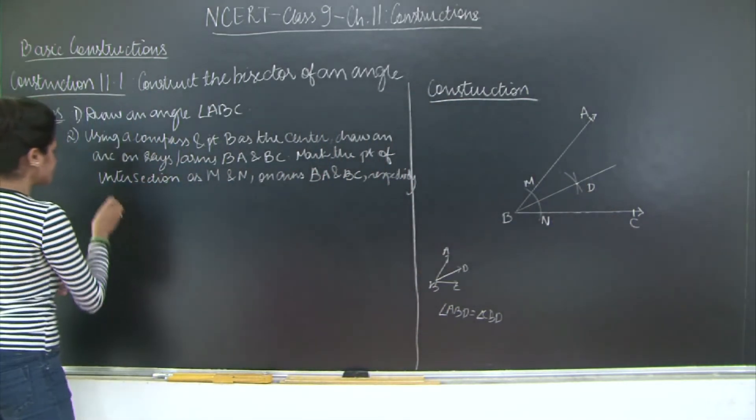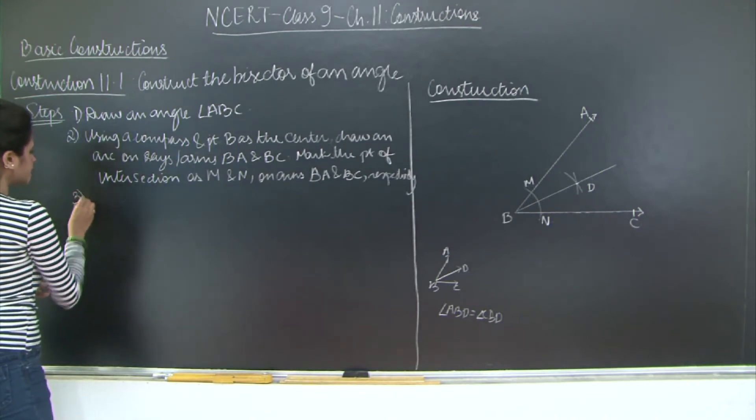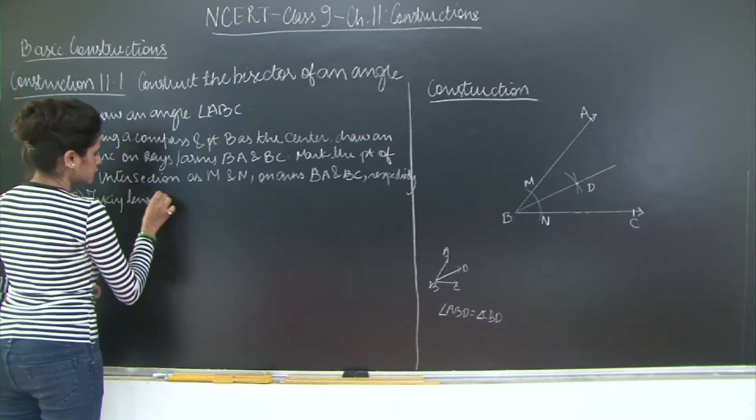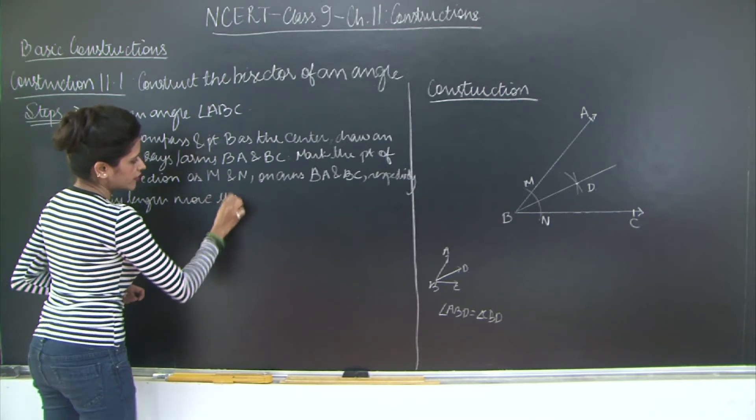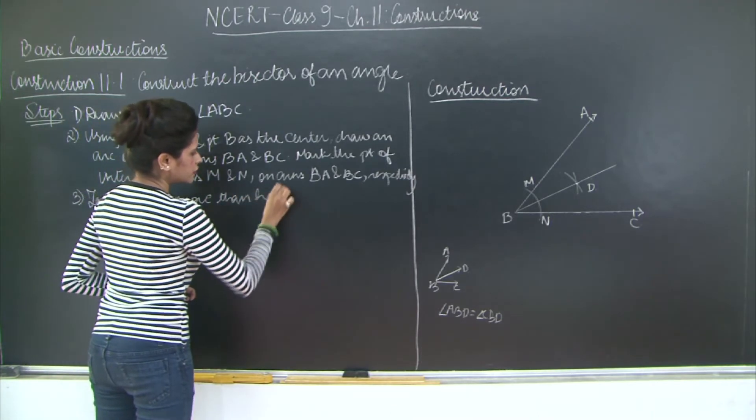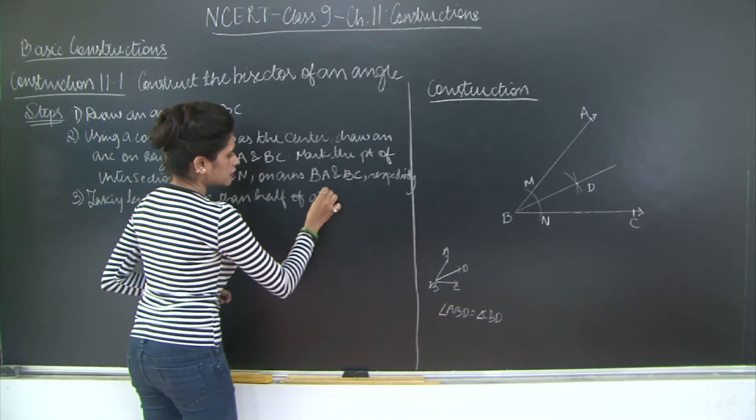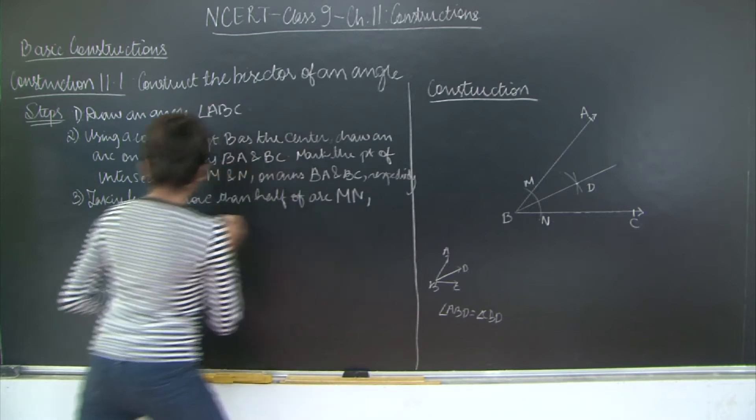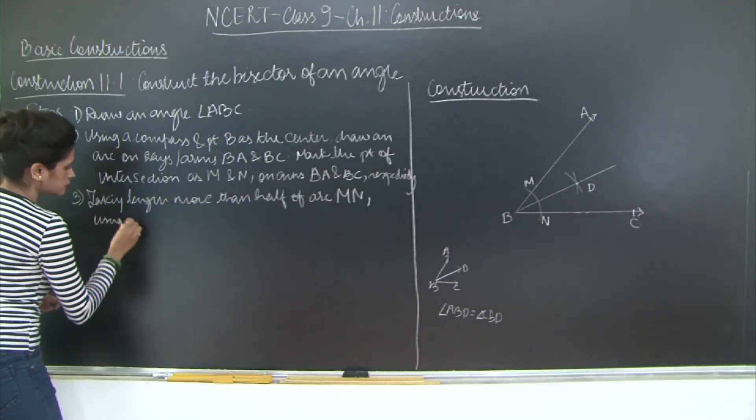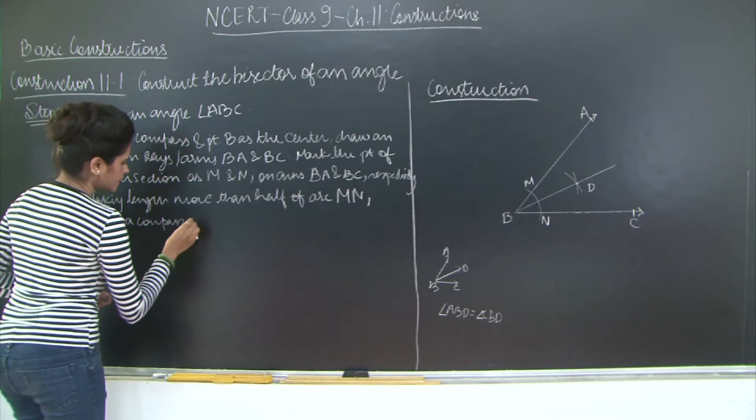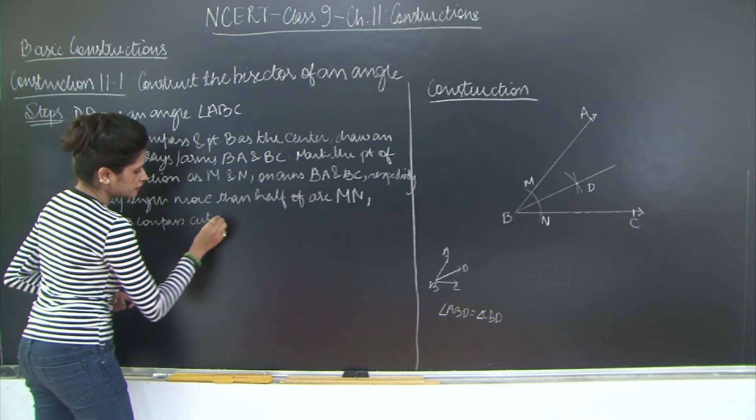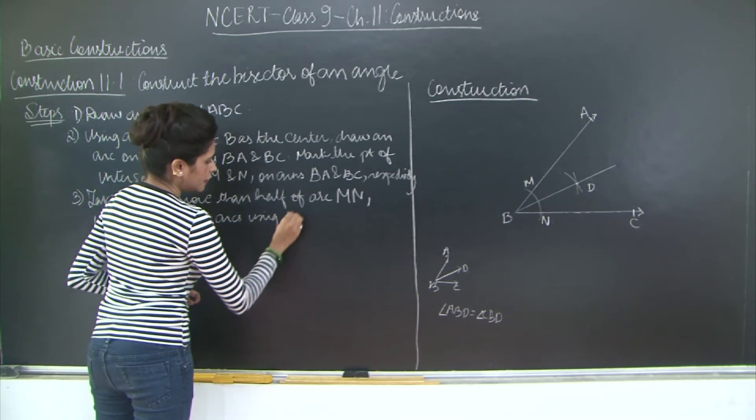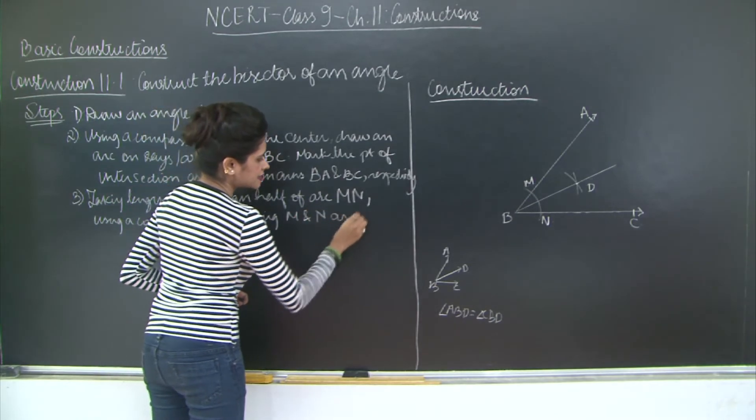But let us just complete the steps first. So your third point is, taking length more than half of arc MN using a compass. Let us cut arcs using M and N as centers.